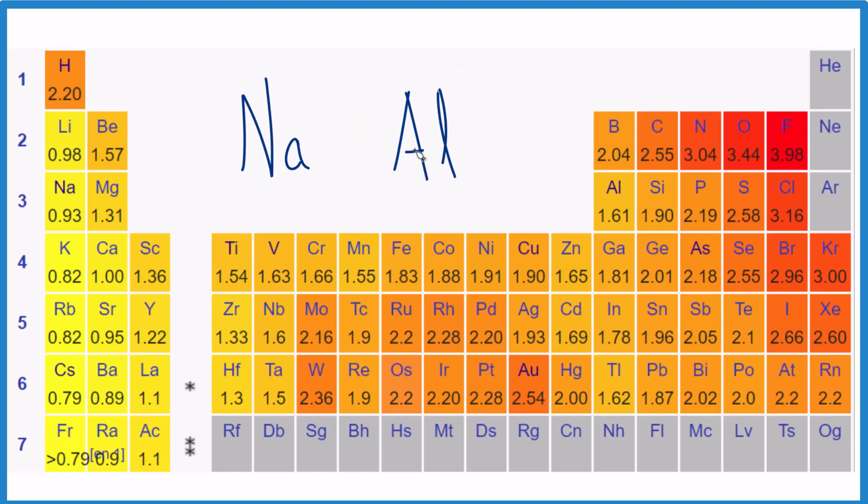So first off, the real quick way is to find fluorine on the periodic table and see which is closer, aluminum or sodium. Whatever is closer to fluorine, that's more electronegative.